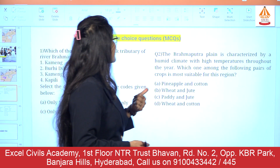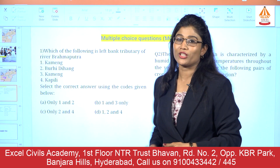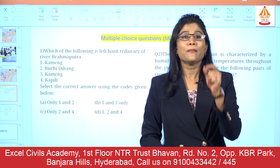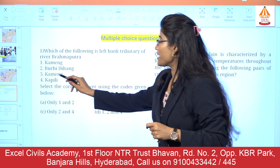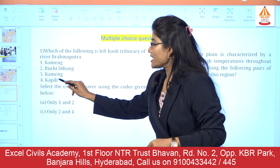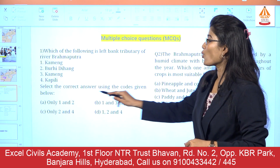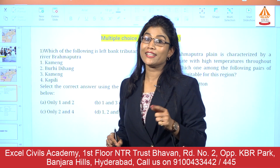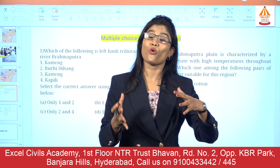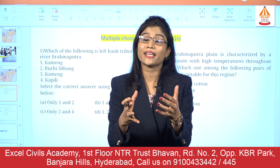Let's solve some MCQs. The first MCQ is: which of the following is a left bank tributary of the river Brahmaputra? The options are Kameng, Buri Dihang, Tista, and Kapili. Select the correct answer using the codes given below. This is a very interesting question for revision purposes, and you can also directly come and solve the MCQs to check your knowledge.